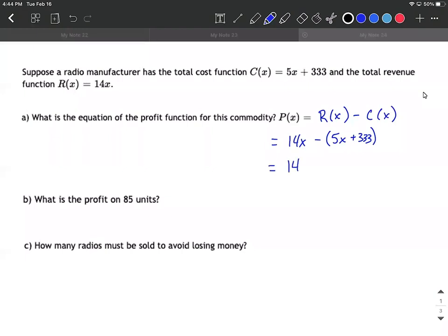If we drop our parentheses, it's 14x, and then we're going to distribute. We're going to treat this like a negative one out in front that gets distributed to both terms on the inside. That leaves us with minus 5x minus 333. Combine our like terms: 14x minus 5x makes 9x minus 333, and that's our profit function.